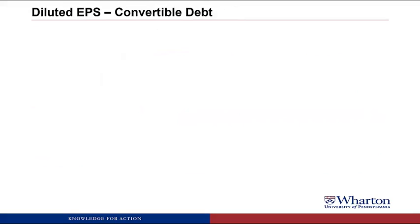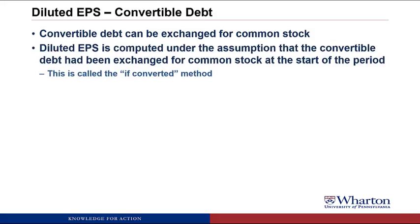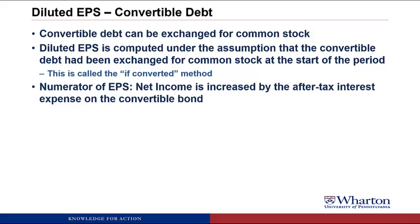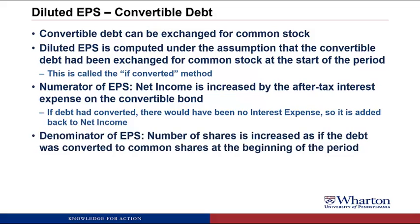First, we look at the effect of convertible debt on diluted EPS. Convertible debt can be exchanged for common stock at the holder's option. Diluted EPS is computed under the if-converted method — the assumption that convertible debt was exchanged for common stock at the beginning of the period. In the numerator of EPS, we adjust net income by adding back the after-tax interest expense on the convertible bond, since if the debt had converted, there would have been no interest expense. In the denominator, the number of shares is increased by the new shares that would exist if the debt had been converted to common shares at the beginning of the period.